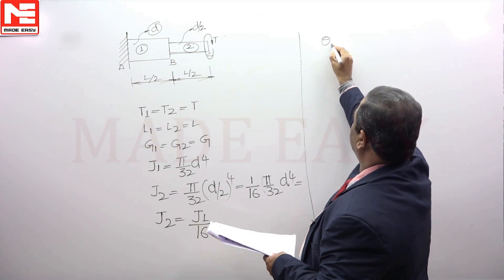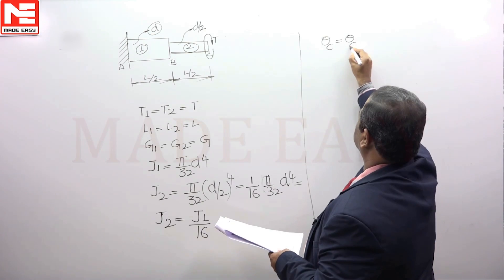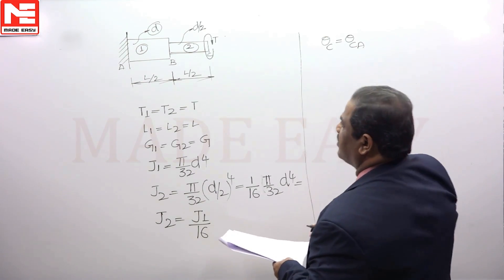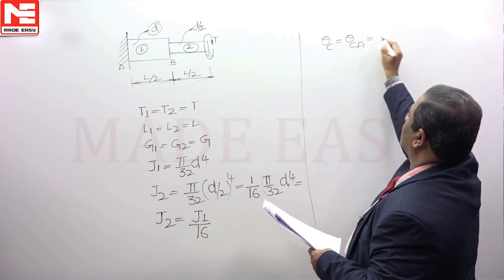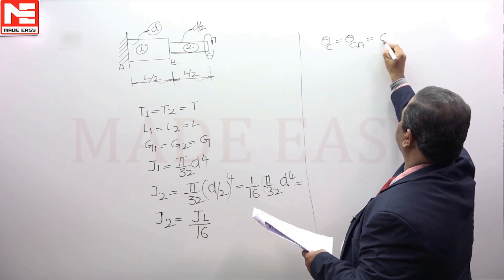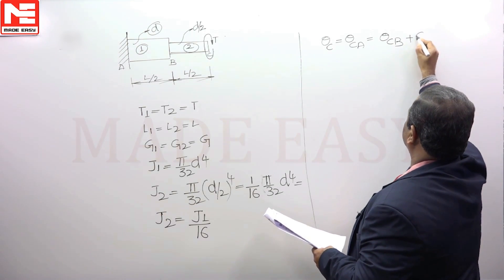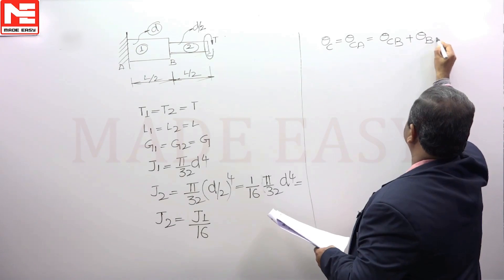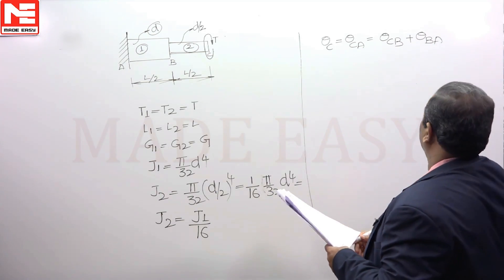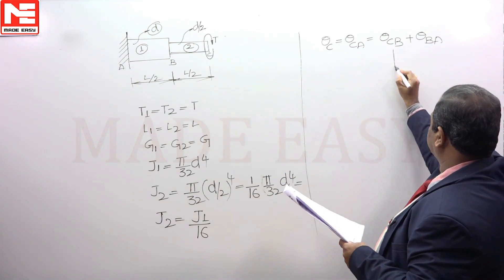In a series connection, the angles of twist are cumulative. To find the angle of twist at C, theta of C with reference to A — since it is equivalent to two shafts — this should be written as theta of C with reference to B plus theta of B with reference to A. In the given question, we need to find the angle of twist of C with reference to B.